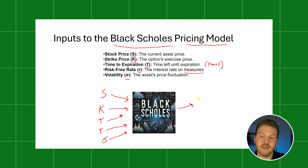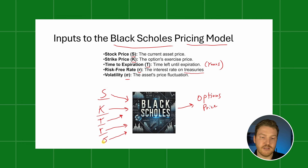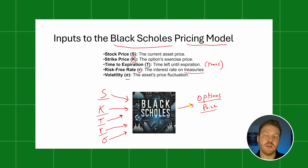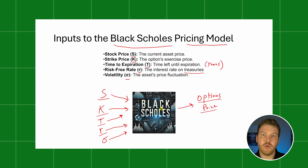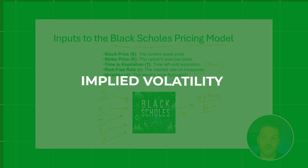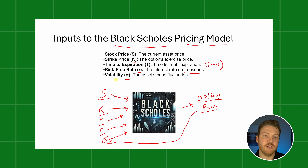Once we have all these inputs, what we're trying to find is the option's price or premium — the amount you would have to pay to get the option. The thing is, we can easily look up the stock price, the exercise price, the time to expiration, and the treasury rate. The one thing we cannot easily look at is the implied volatility. We can go out into the market and observe what the option is actually priced at. So although it looks like circular logic, the option's market price is actually driving what we solve for as implied volatility.